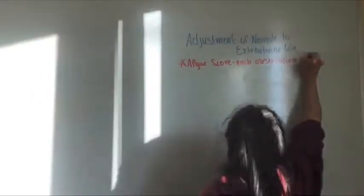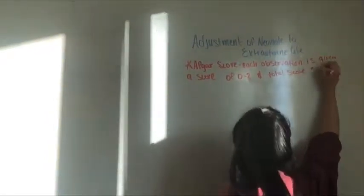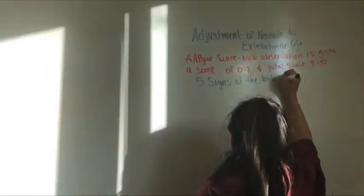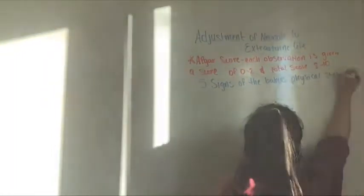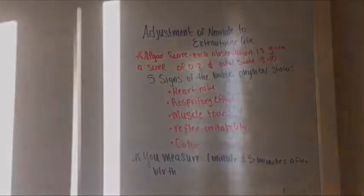Adjustment of neonate to extrauterine life. The APGAR score gives each observation a score of 0 to 2 and its total APGAR score is 8 to 10, which means very healthy. There are five signs of the baby's physical status: heart rate, respiratory effort, muscle tone, reflex irritability, and color. These are measured at one minute and five minutes after birth.